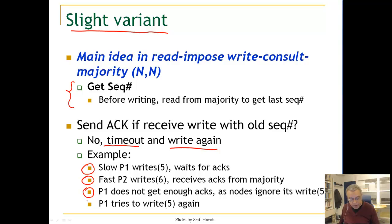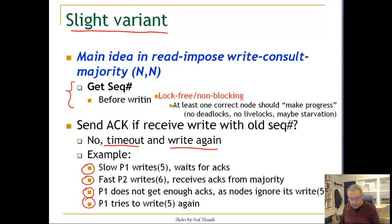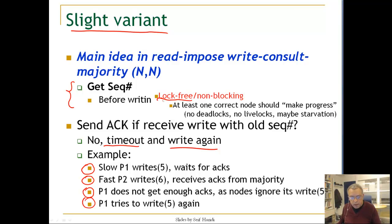P1 does not get enough acknowledgements since nodes ignored it, so P1 tries again. The question is whether this algorithm satisfies atomicity or linearizability. One observation is that it is a lock-free algorithm in the sense that P1 might keep retrying, but there is always a faster process taking over. So this is not a wait-free algorithm — it is lock-free, meaning at least one correct node makes progress, in this case the faster one.